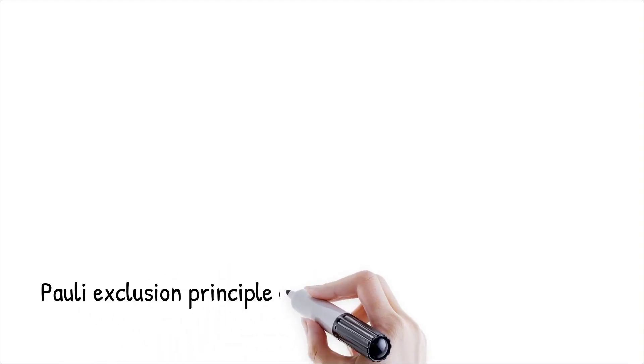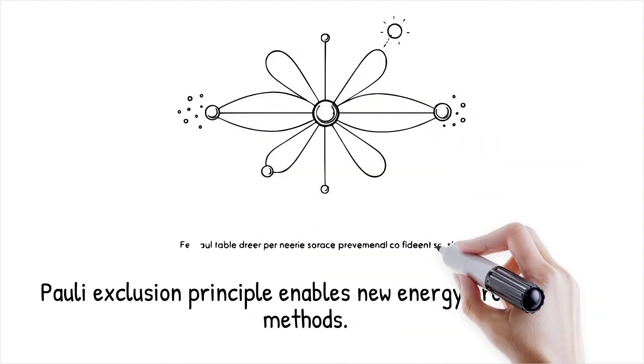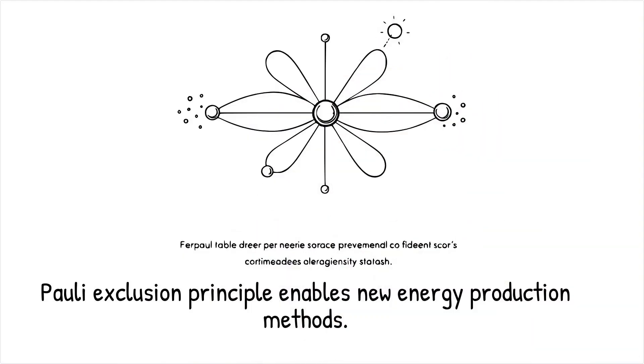For instance, the Pauli exclusion principle, which governs fermions, generates an inherent energy difference when fermions transition into bosonic states and vice versa. Harnessing this difference creates an entirely new form of energy production.